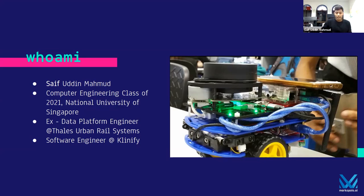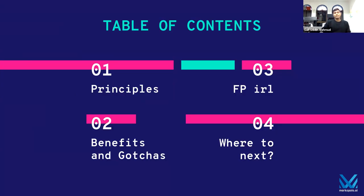So enough about me. The talk is really about four basic things: the principles of functional programming, the benefits and gotchas of functional programming — it's not all roses like some people say. I'll also have some tips about functional programming in real life, and I'll point you to where to go next if you're really intrigued.